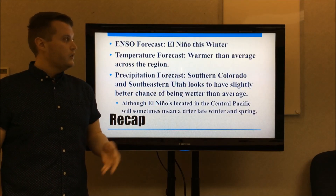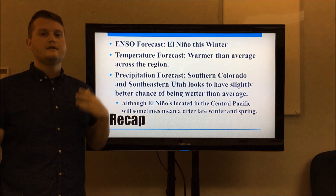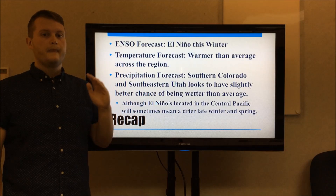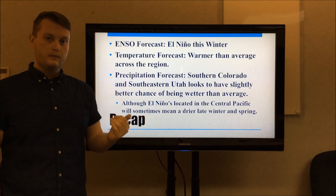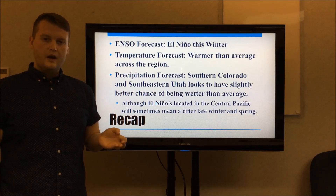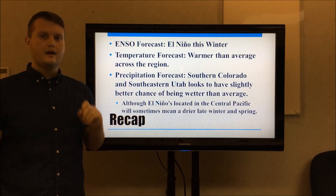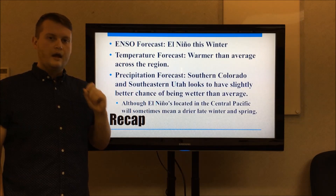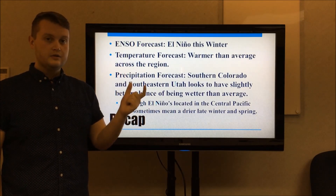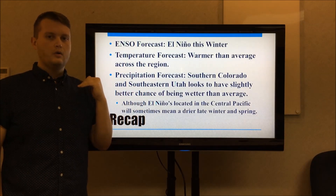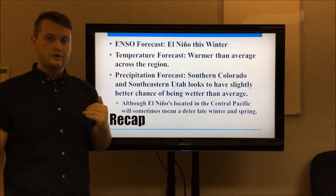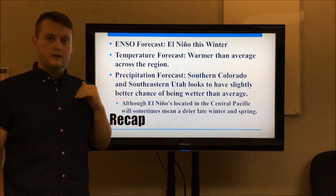A quick review: the current ENSO forecast is El Niño this winter, this winter is looking to be warmer than average, and portions of southwestern Colorado and southeastern Utah will potentially be wetter than average. One side note: when El Niño events are centered more in the central Pacific rather than the eastern Pacific, that can sometimes mean our end of winter to springtime will actually end up being a bit drier than average — so definitely keep that in the back of your minds.